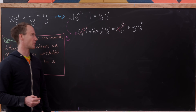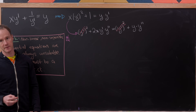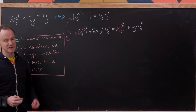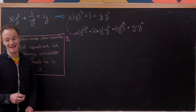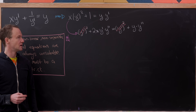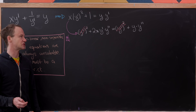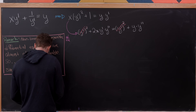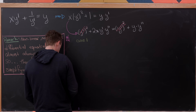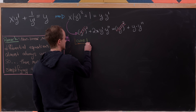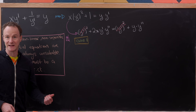Now we have 2x times y prime times y double prime equals y times y double prime. You might say, let's just divide this whole thing by y double prime, which would give us a first-order differential equation that's fairly easy to solve. But we can only do that if y double prime is not identically equal to the zero function. So let's break this into cases: the first case is when y double prime equals zero, and the other case is when it does not.